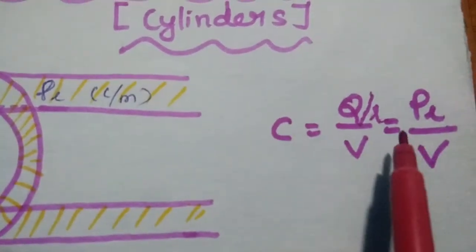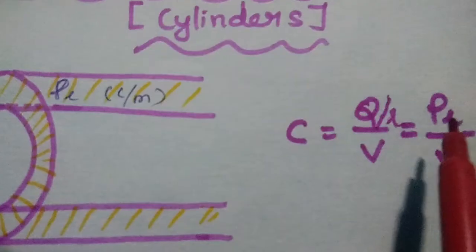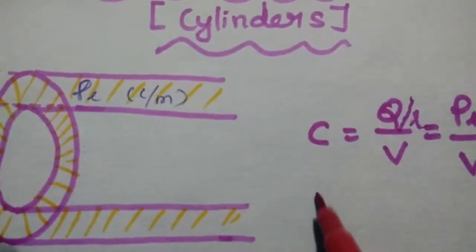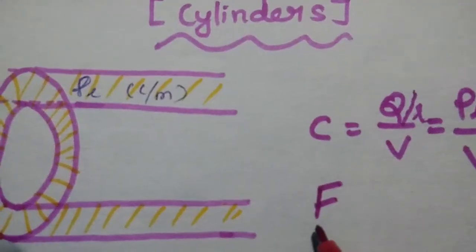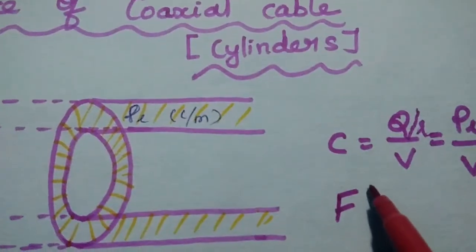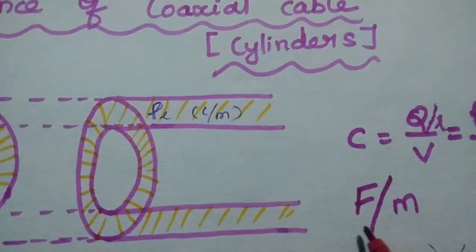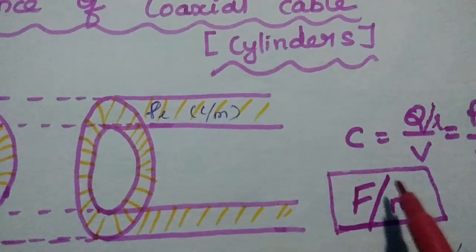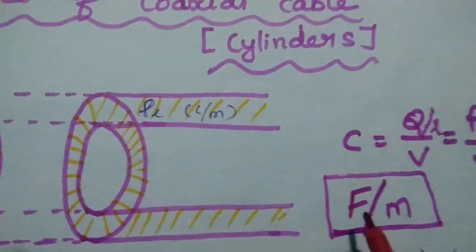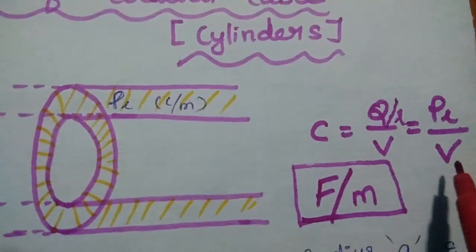So capacitance can be defined for this coaxial cable as Rho L by V, instead of Q by V. The unit of capacitance is Farad, as we know, but for this coaxial cable we have to express it as Farad per meter for that particular length. So the unit of the capacitance for coaxial cable is Farad per meter, and that's why we use the formula Rho L by V.